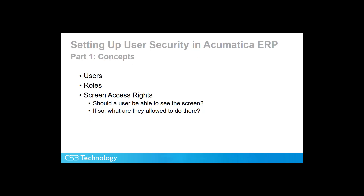The basic components of user security in Acumatica are users and roles. Users equate to the login user ID and often are employees, but not necessarily. Roles are the security objects that define what a user is able to see and do inside the system.